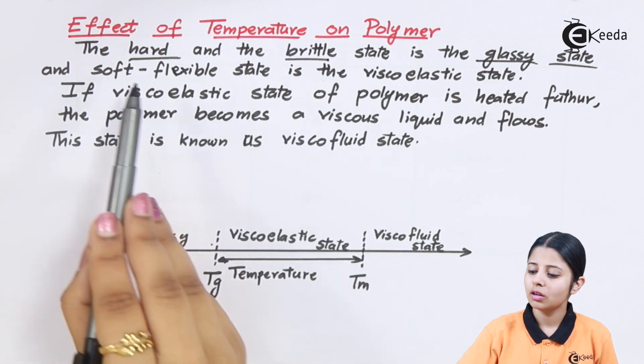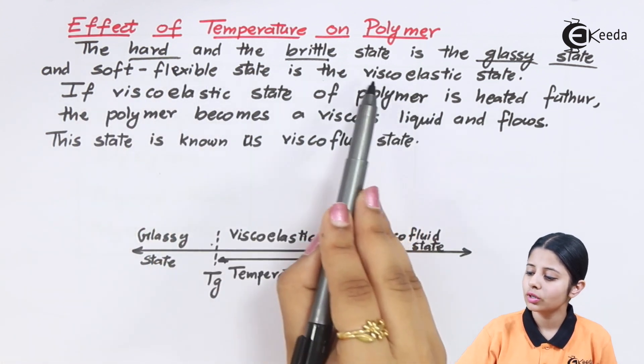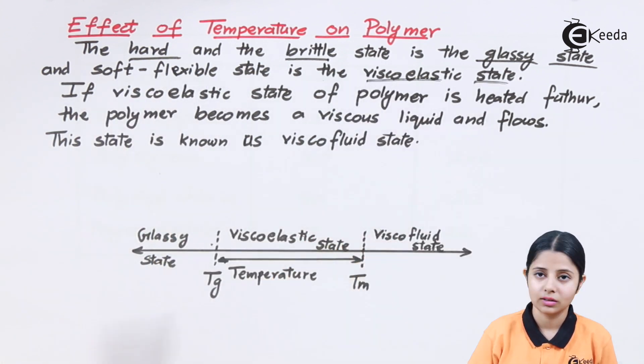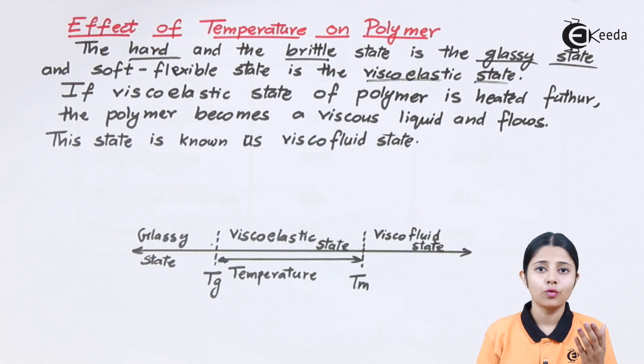The other state is the soft flexible state also known as the viscoelastic state. Viscoelastic state happens when you provide some kind of energy to that polymer. Generally this energy is in the form of heat.